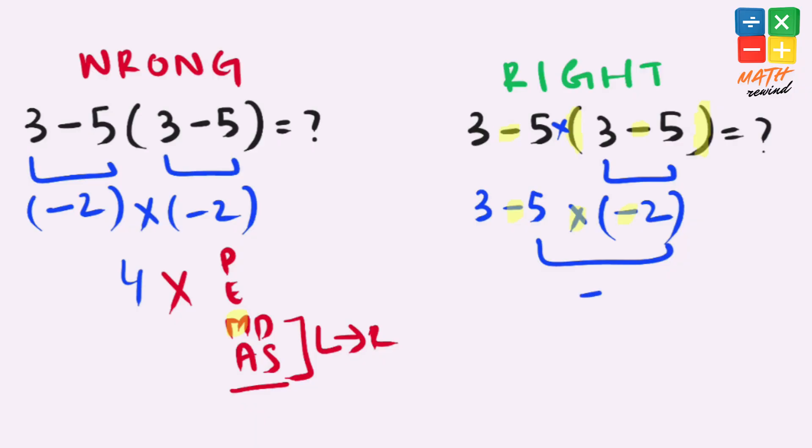5 times negative 2 gives us negative 10, and our expression simplifies to 3 minus negative 10. Minus minus is plus, so 3 plus 10, that gives us 13, which is the final and correct answer to this problem.